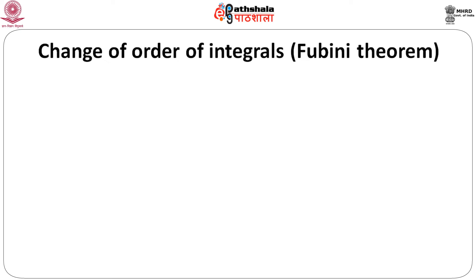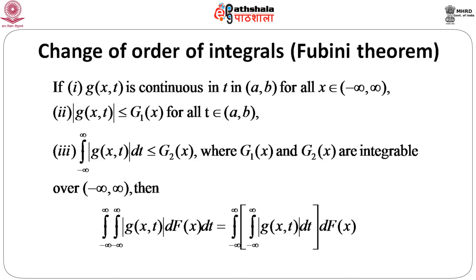Now the question is: can we change the order of two integrals — a double integral? The answer is yes, under certain conditions known as Fubini's Theorem. Suppose g(x, t) is continuous in t for t ∈ [a, b] and for every x ∈ (−∞, ∞), and |g(x, t)| is bounded by integrable functions G₁(x) and G₂(x) over (−∞, ∞). Then we can immediately change the order of integration.